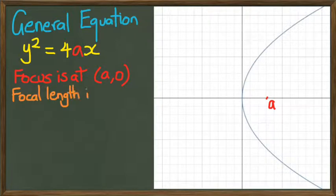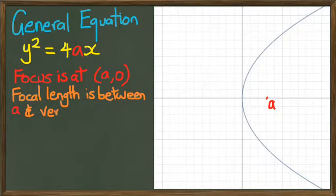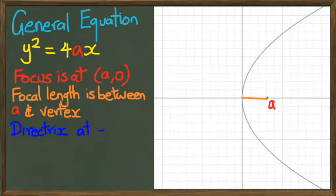The focal length is the distance between a and the vertex. The orange line there, that's the focal length. And you have another little thing called directrix which will be at -a, and it'll look like a little dotted line like this.